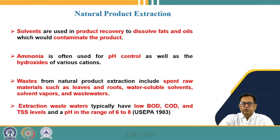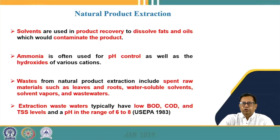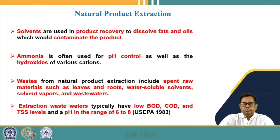Waste from natural product extraction includes spent raw materials such as leaves, roots, and herbs, water-soluble solvents used in product recovery, solvent vapors, and wastewater from equipment washing, floor cleaning, and spills. Natural product extraction wastewater typically has low BOD, low COD, low TSS values, and pH in the range of 6 to 8.